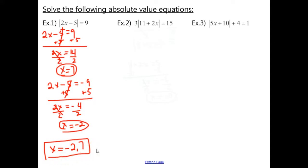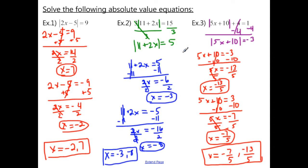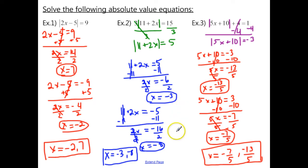If you made a mistake, pause and check your work with mine to see where you went wrong. Now go ahead and pause and try examples 2 and 3 — those are going to involve using step 1. For example 2, following our steps carefully, you should have gotten x equals negative 3 and negative 8. For example 3, you should have gotten x equals negative 7 over 5 and negative 13 over 5. If you didn't get those, double check your work with mine to see where you made a mistake.